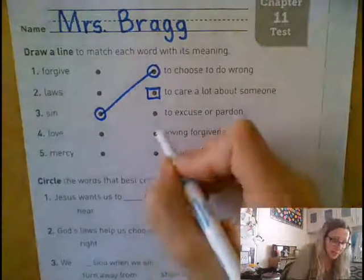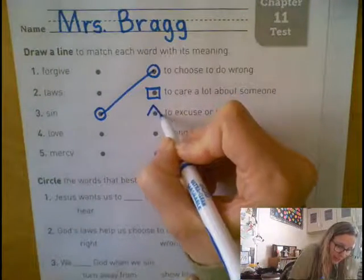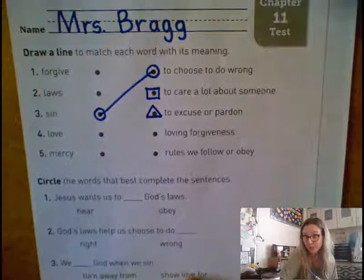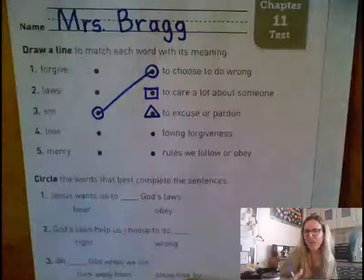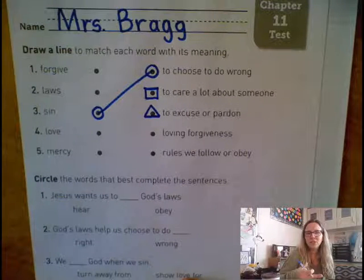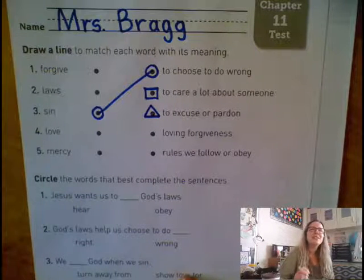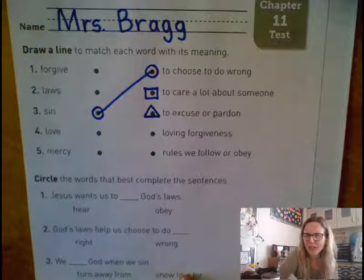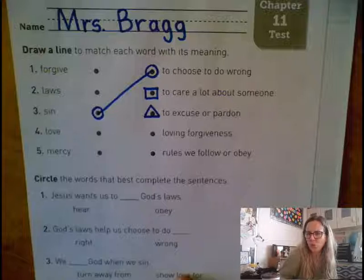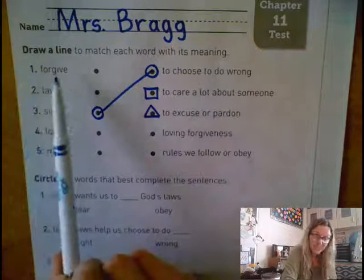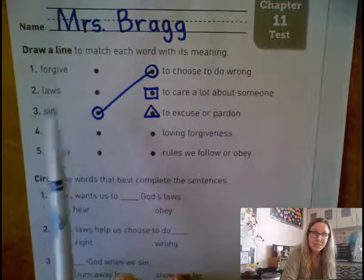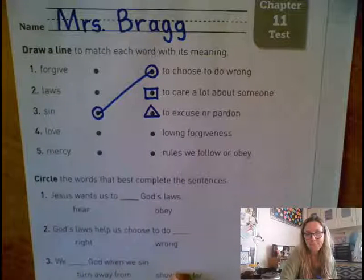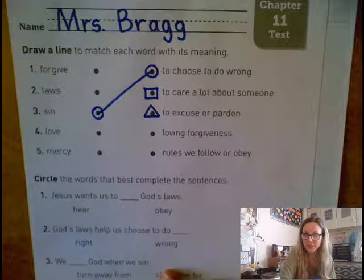The next one, I'm going to put a triangle around it, and it says to excuse or pardon. That means if you tell someone it's okay — we don't even say it's okay, but we say I accept your apology. When we do that, what are we showing them? Are we showing forgiveness, laws, love, or mercy? Draw a triangle around the answer and connect them.